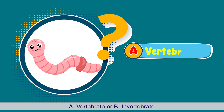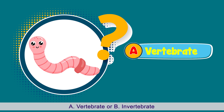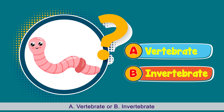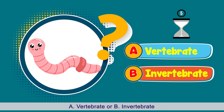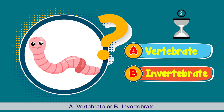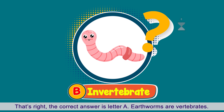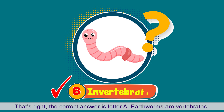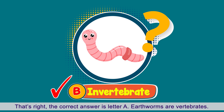Can you tell me which group earthworms belong to? A. Vertebrate or B. Invertebrate? That's right! The correct answer is letter B. Earthworms are invertebrates.